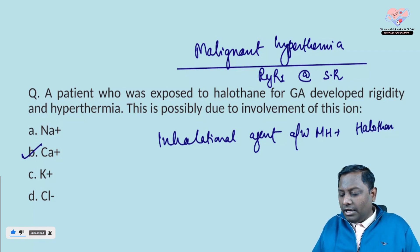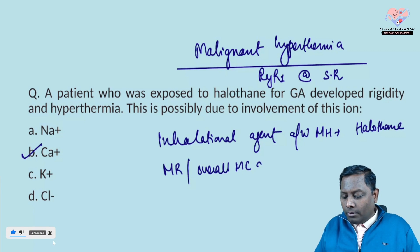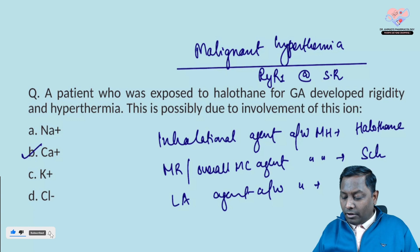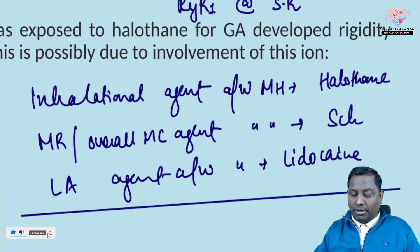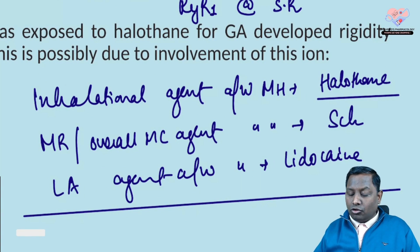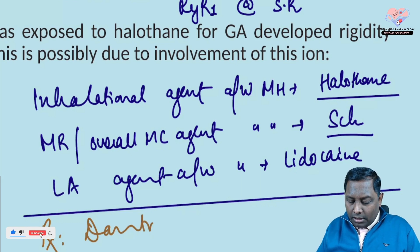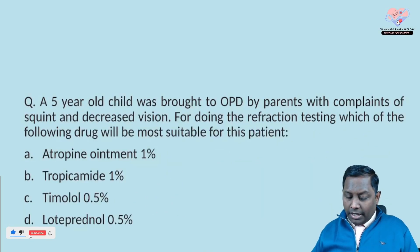When it comes to the inhalational agent associated with malignant hyperthermia, it is always halothane. The overall most common agent — or muscle relaxant — associated with malignant hyperthermia is succinylcholine. For local anesthetic agents, the risk is lesser, but if you must choose one, go with lidocaine. The management of malignant hyperthermia is dantrolene, which is the drug of choice.